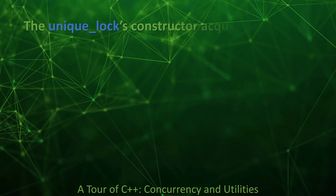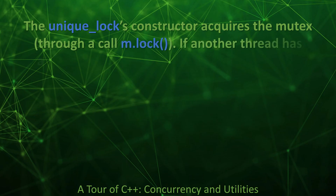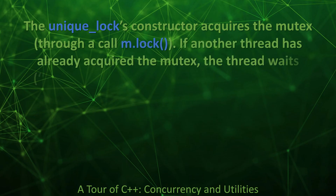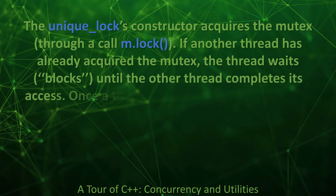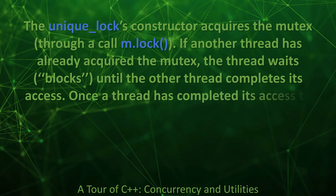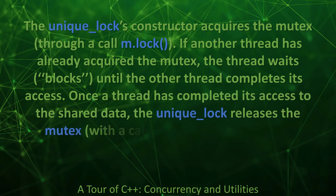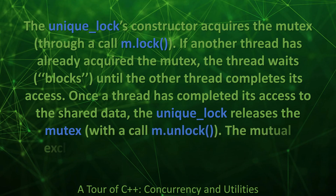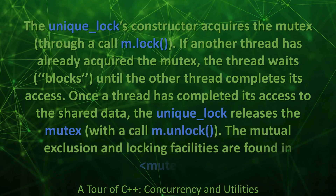The unique_lock's constructor acquires the mutex through a call to m.lock(). If another thread has already acquired the mutex, the thread waits — blocks — until the other thread completes its access. Once a thread has completed its access to the shared data, the unique_lock releases the mutex with a call to m.unlock(). The mutual exclusion and locking facilities are found in <mutex>.